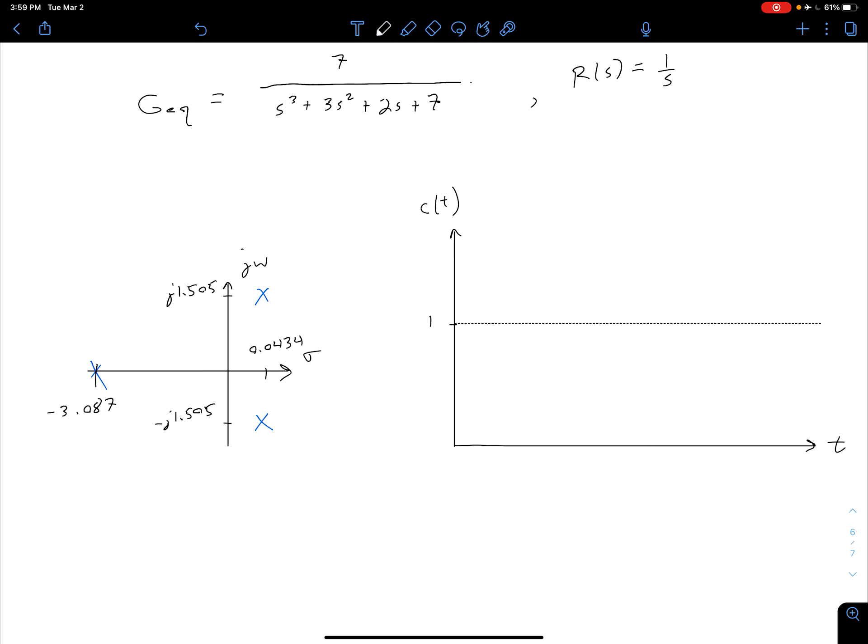So if we were to plot this response we're going to expect it to be unbounded because we notice over here we have two poles in our right half plane. And so as long as we have at least one pole in our right half plane we're going to have some part of our response that's going to be unbounded.